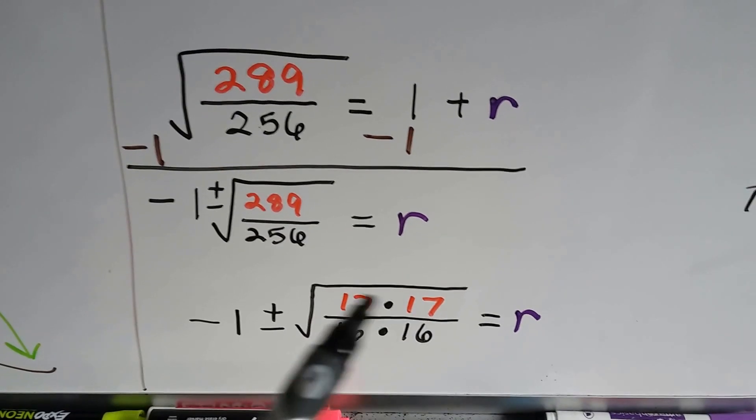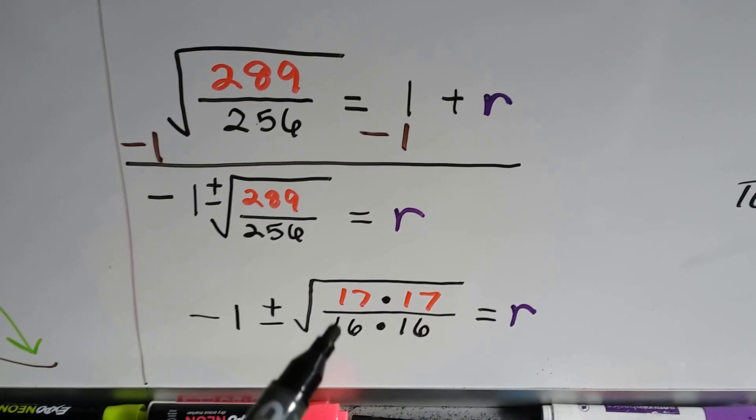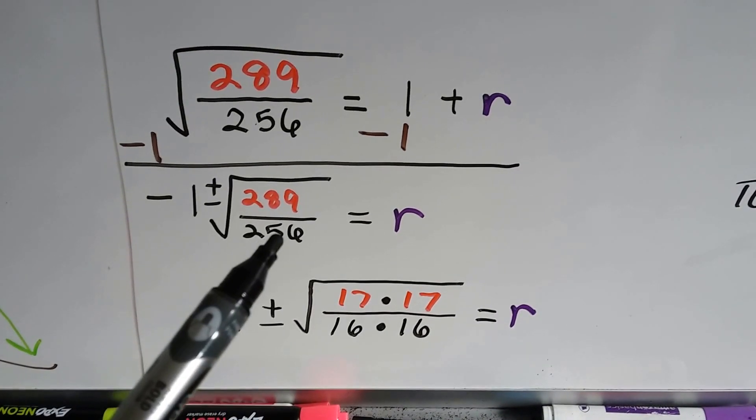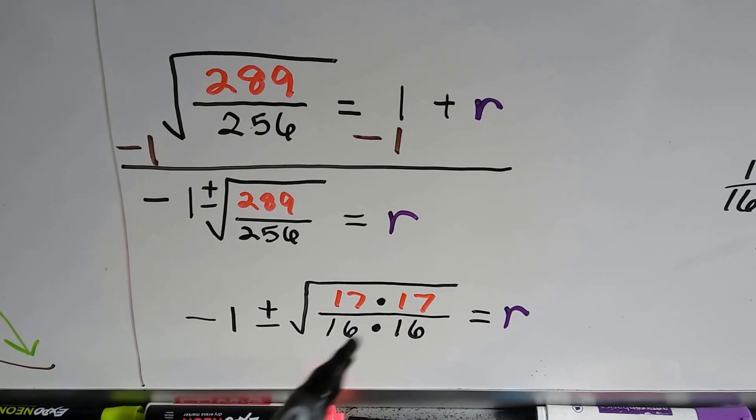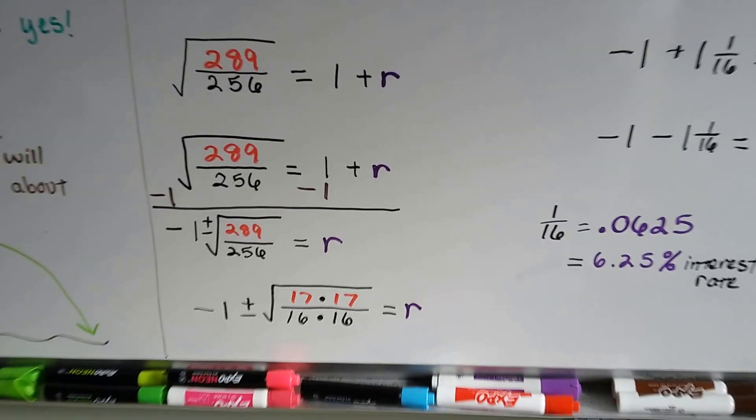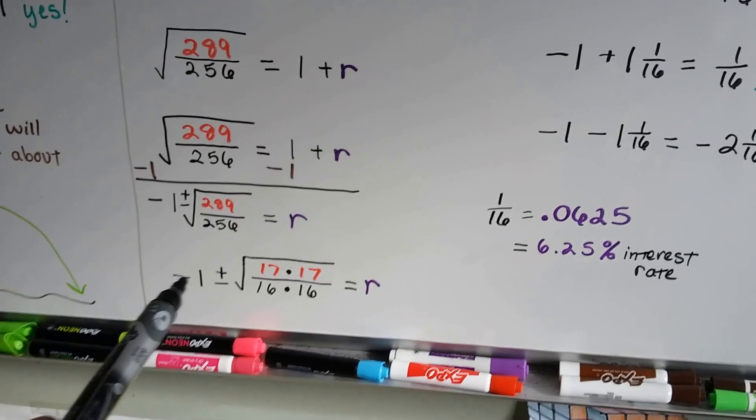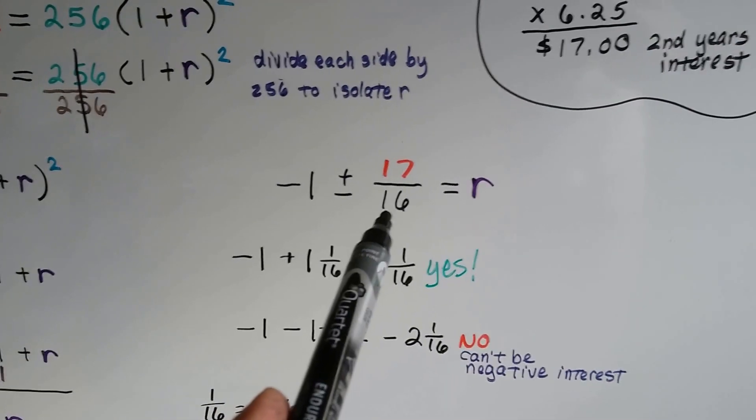We still need to isolate the R. So from this, we do this. We subtract 1 from each side of the equation, and now our new equation is negative 1 plus or minus the square root of 289 divided by 256 is equal to R, and R is all by itself. Well, 17 times 17 is 289, and 16 times 16 is 256.